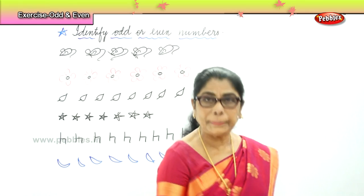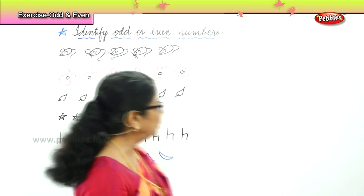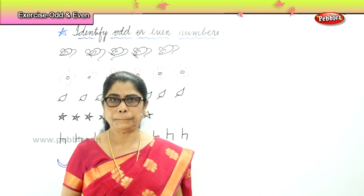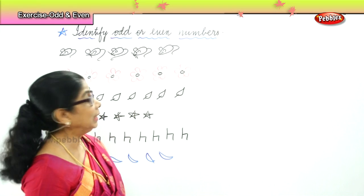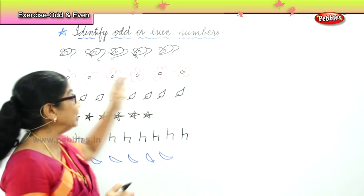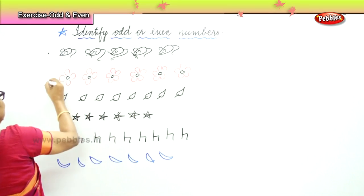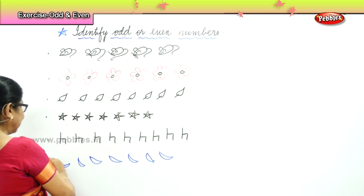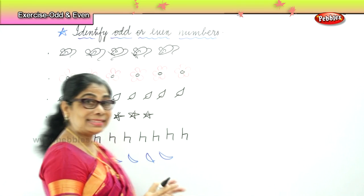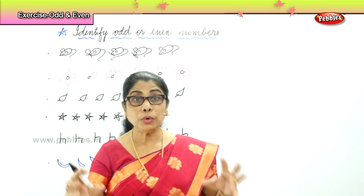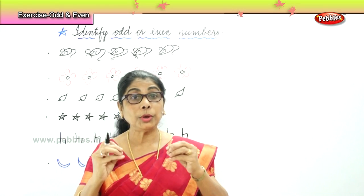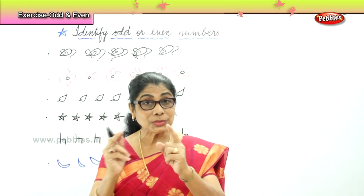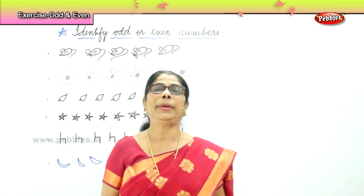We have some pictures here. What we are going to do — we are going to group them. We have one, two, three, four, five and six. Six diagrams are there. We are going to pair up, we are going to group. Count in twos — you learned that, isn't it? So now we are going to give each one a pair.